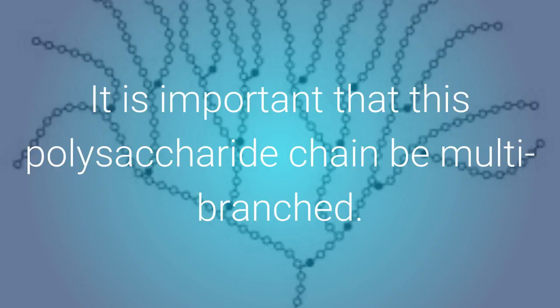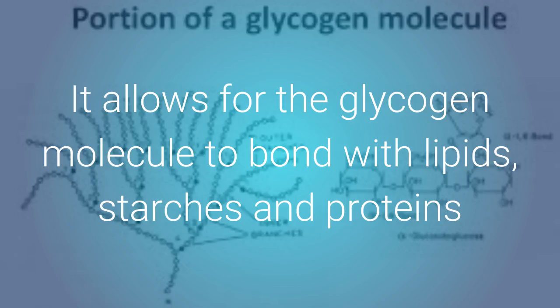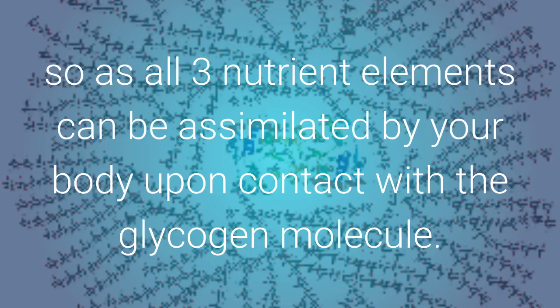It is important that this polysaccharide chain be multi-branched. It allows for the glycogen molecule to be bonded with lipid starches and proteins, so that all three nutrient elements can be assimilated by your body upon contact with the glycogen molecule.